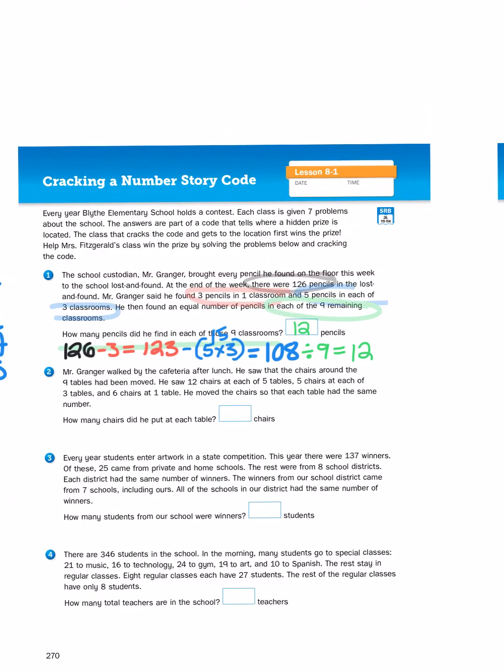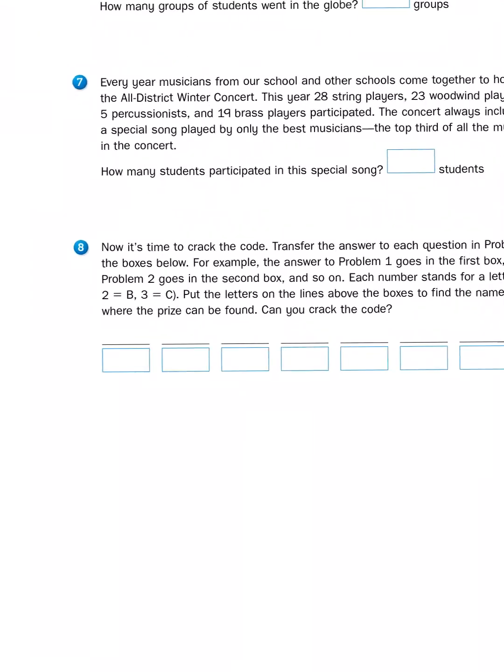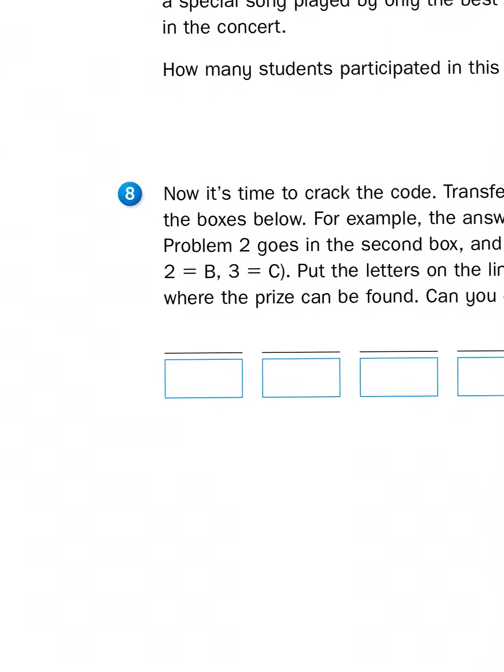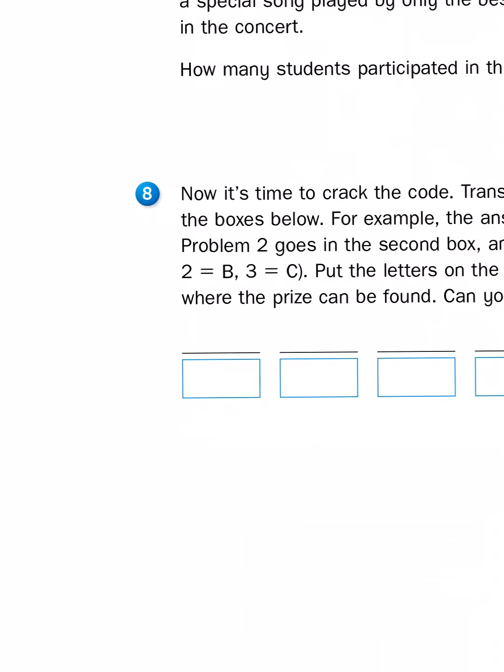I have now completed the first answer. Now let's get to the point where we crack the code. Problem number 8 says now it's time to crack the code. Transfer the answer to each question in problems 1 through 7 to the boxes below. Each number stands for a letter. Hint: 1 equals A, 2 equals B, 3 equals C. So if my first answer for number 1 is 12, I have to think about what is the 12th letter of the alphabet.